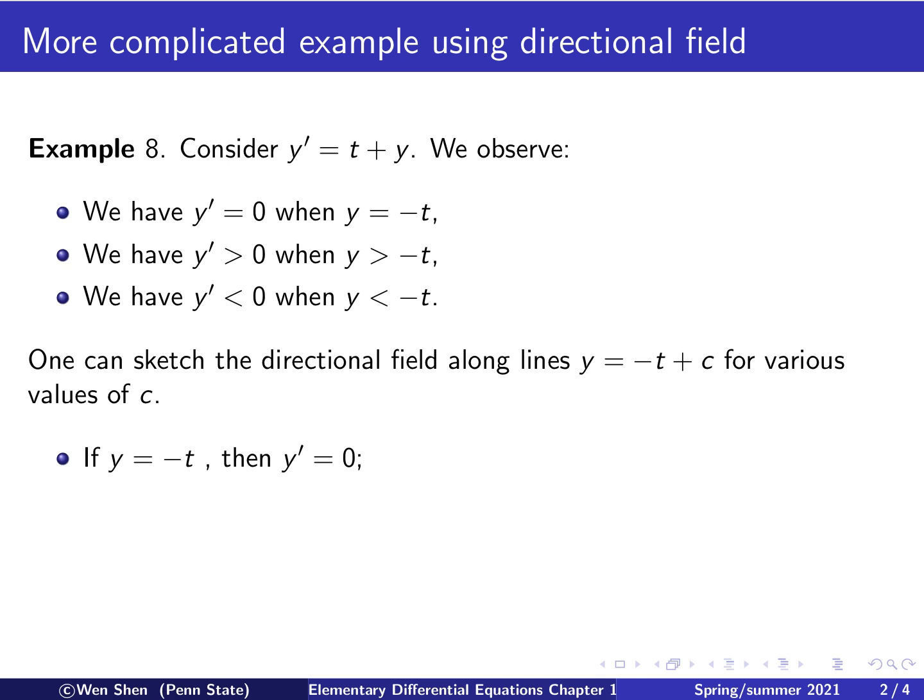Consider the case c equals zero. Then y equals negative t. You put that in, and you see y prime is zero. So all your directional field will be horizontal. Now let's pick c to be negative one, and then y equals negative t minus one. Put that y in, and you see that t plus y is negative one, so y prime is negative one.